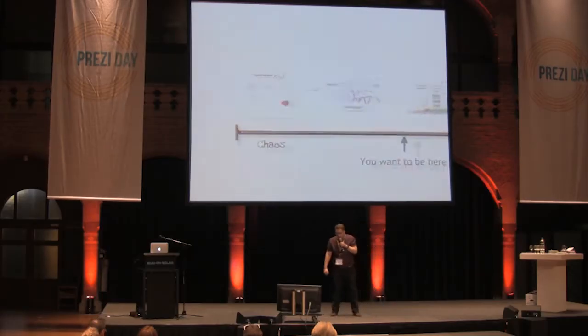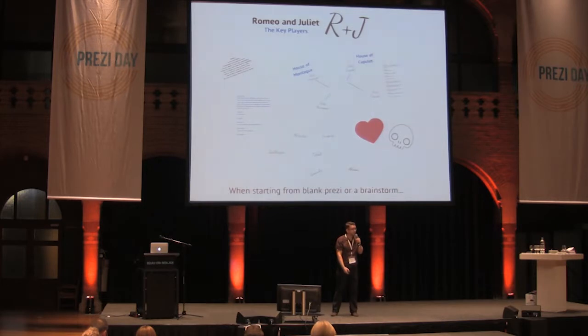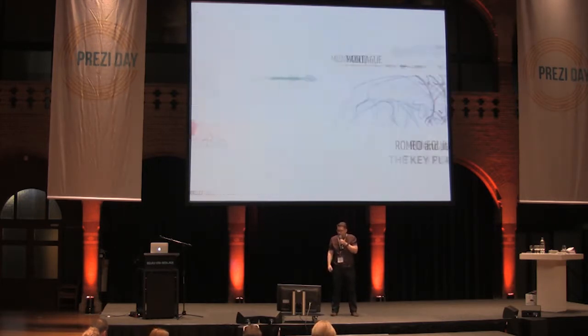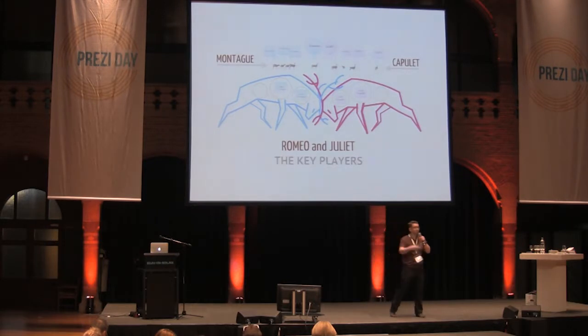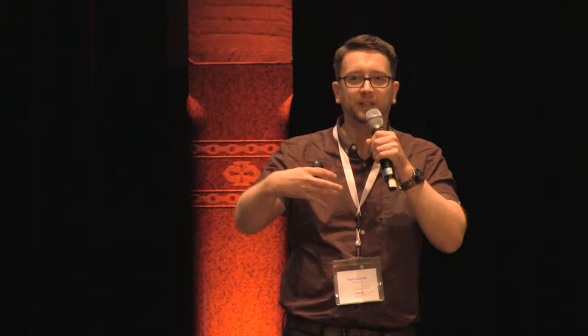Here is pretty much a brainstorm starting from a blank canvas on a presentation about Romeo and Juliet, turned into a wonderful Prezi overview that conveys the tension between the two warring families with the two dueling stags or bucks colliding.